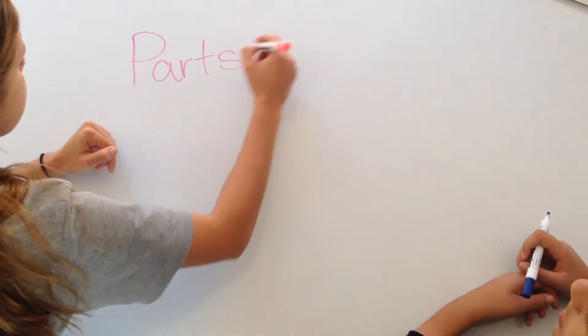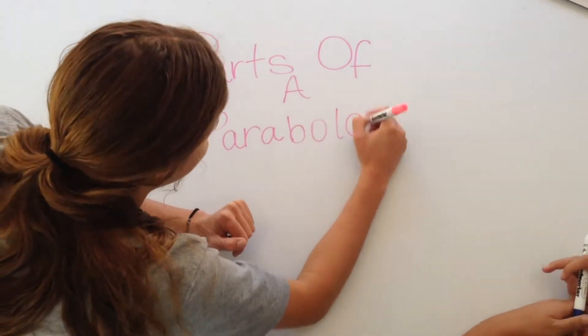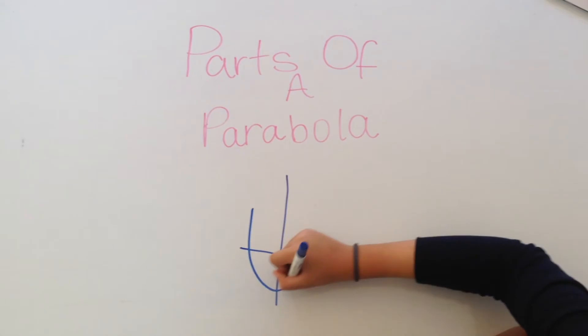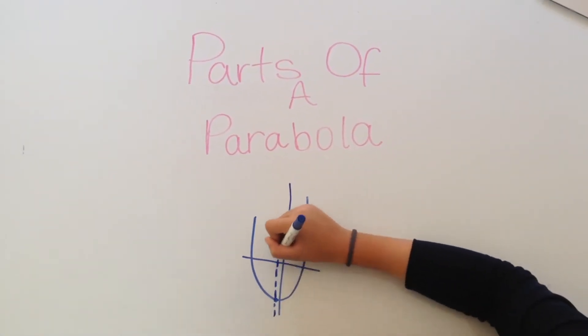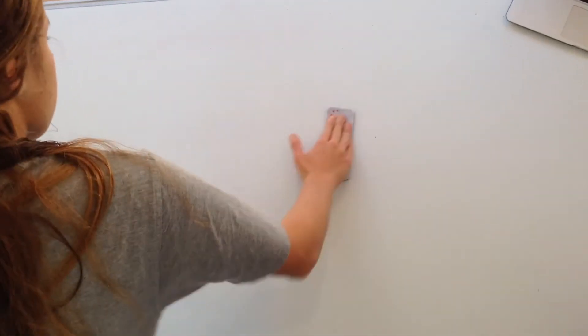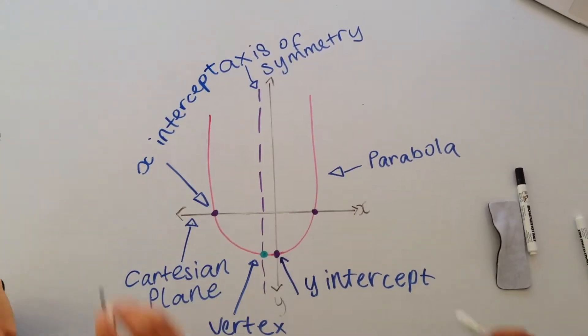In a parabola there are many parts, including a vertex which is the middle point at the bottom of the parabola, and it is what the axis of symmetry cuts through. There are the x and y-intercepts, which is where the parabola cuts through the x-axis and the y-axis.